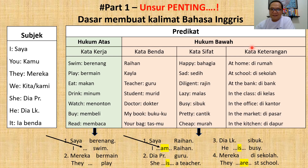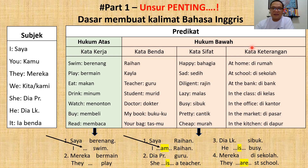Ada dua unsur di dalam bahasa — Bahasa Inggris, Bahasa Indonesia. Dan dua unsur itu harus dipegang dulu kalau Anda ingin mahir Bahasa Inggris. Yang pertama namanya unsur subjek. Kedua, unsur predikat.